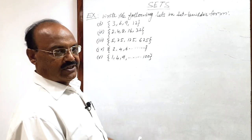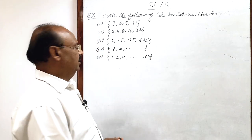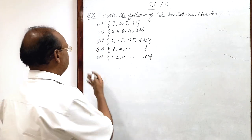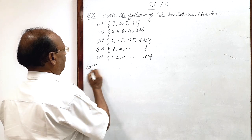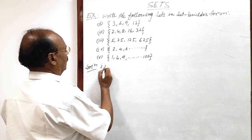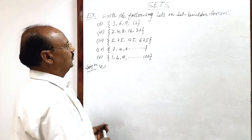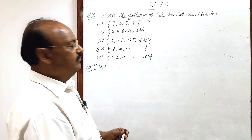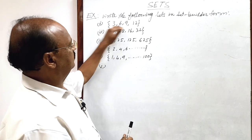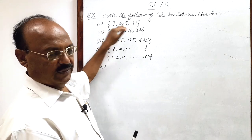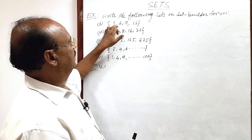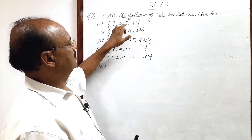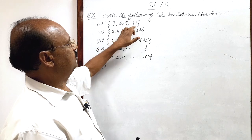Total five questions are here, let us see these questions. First, here the elements are written in tabular form: 3, 6, 9, 12.